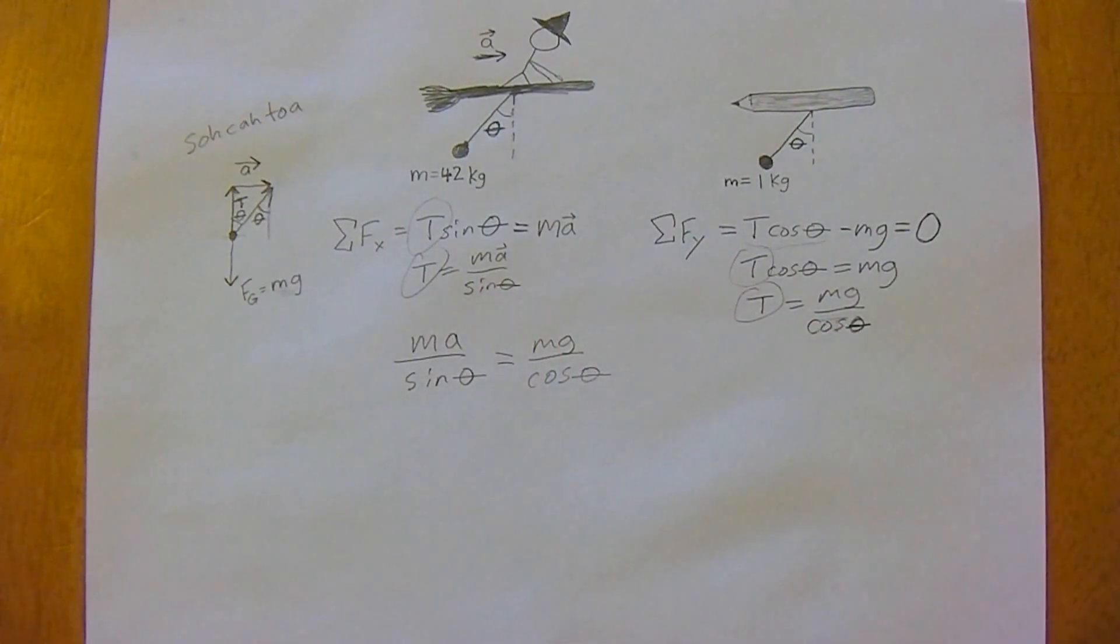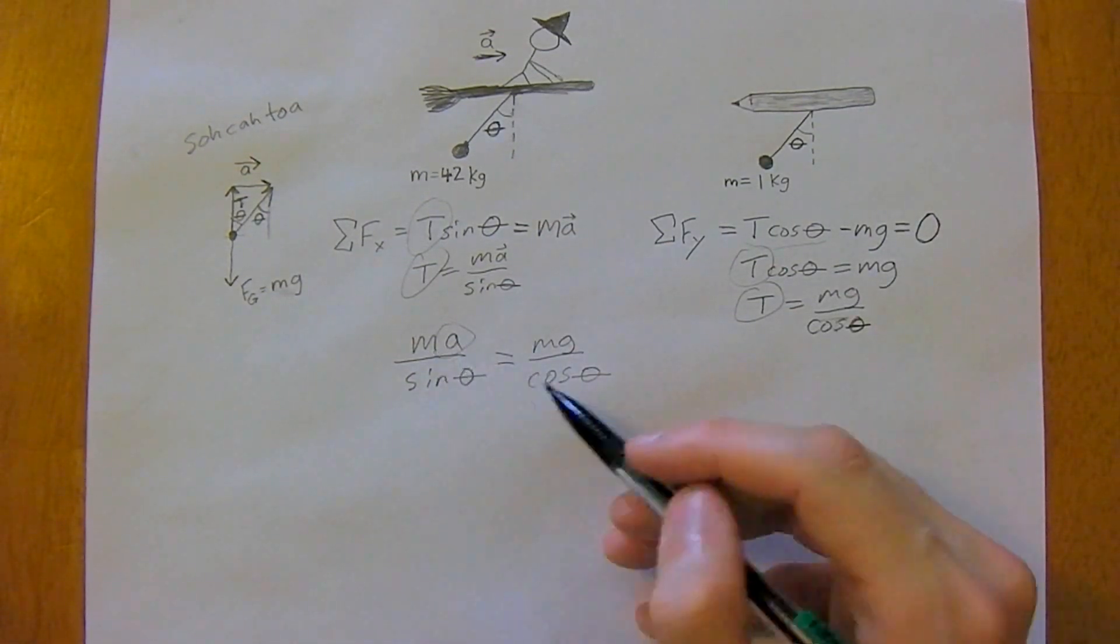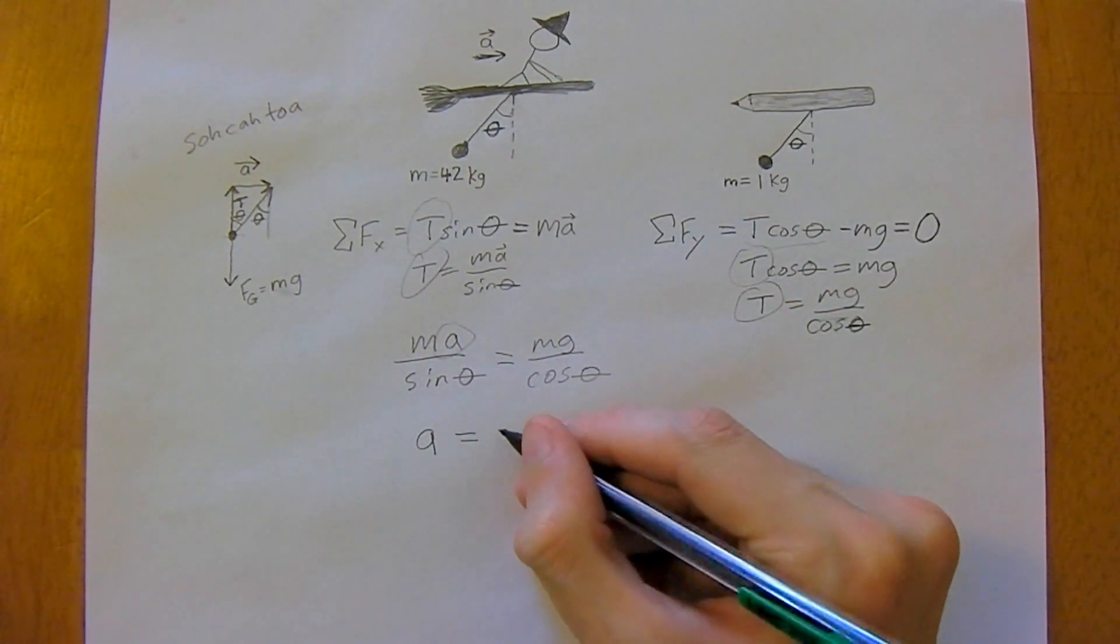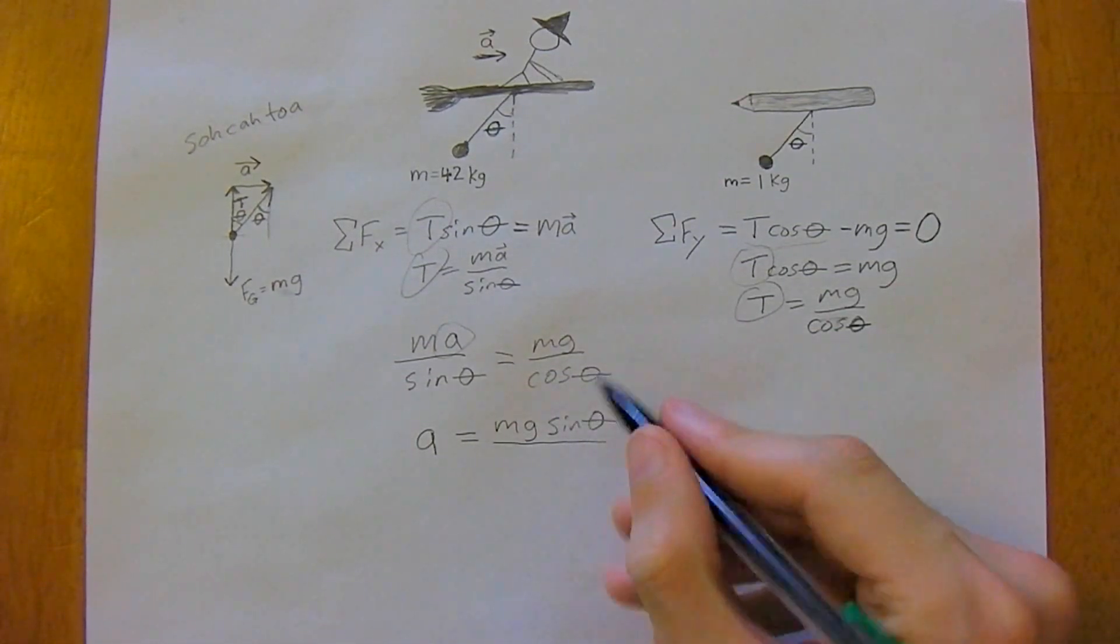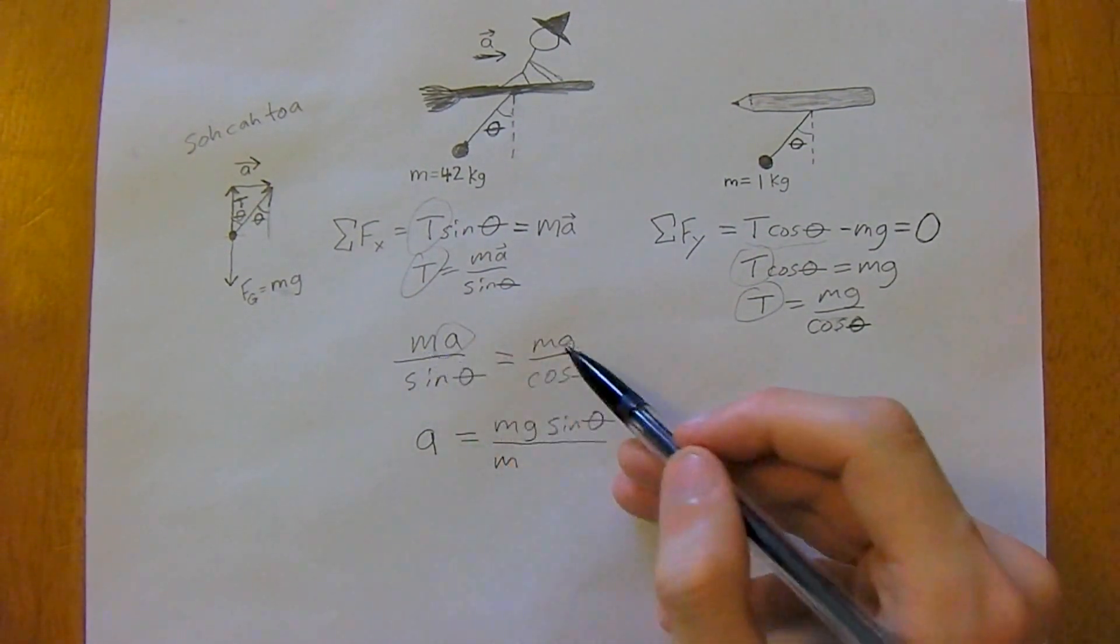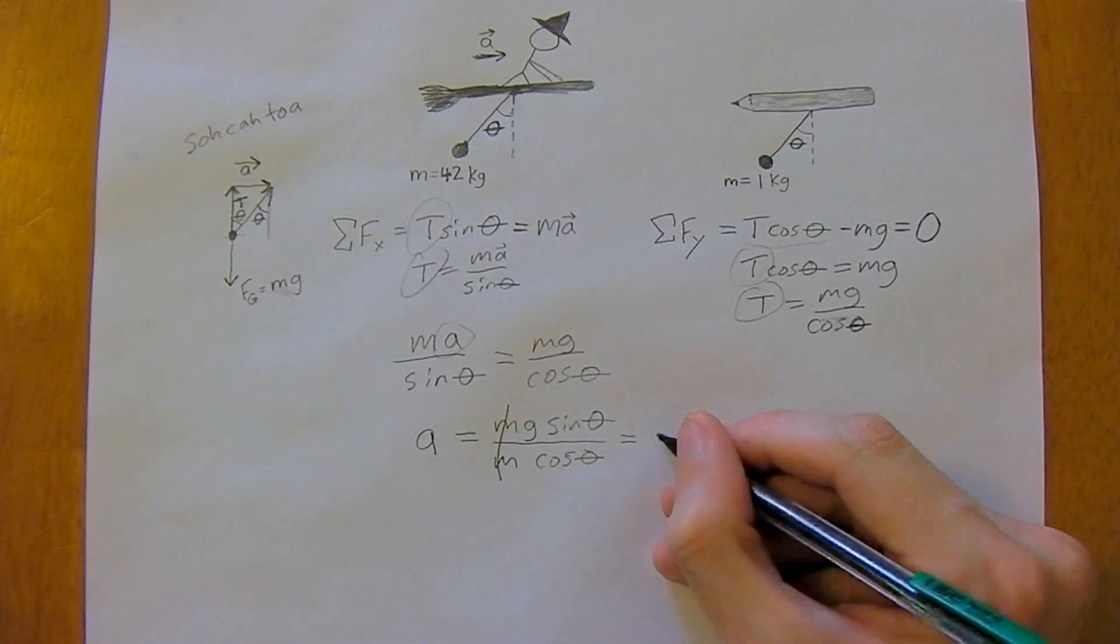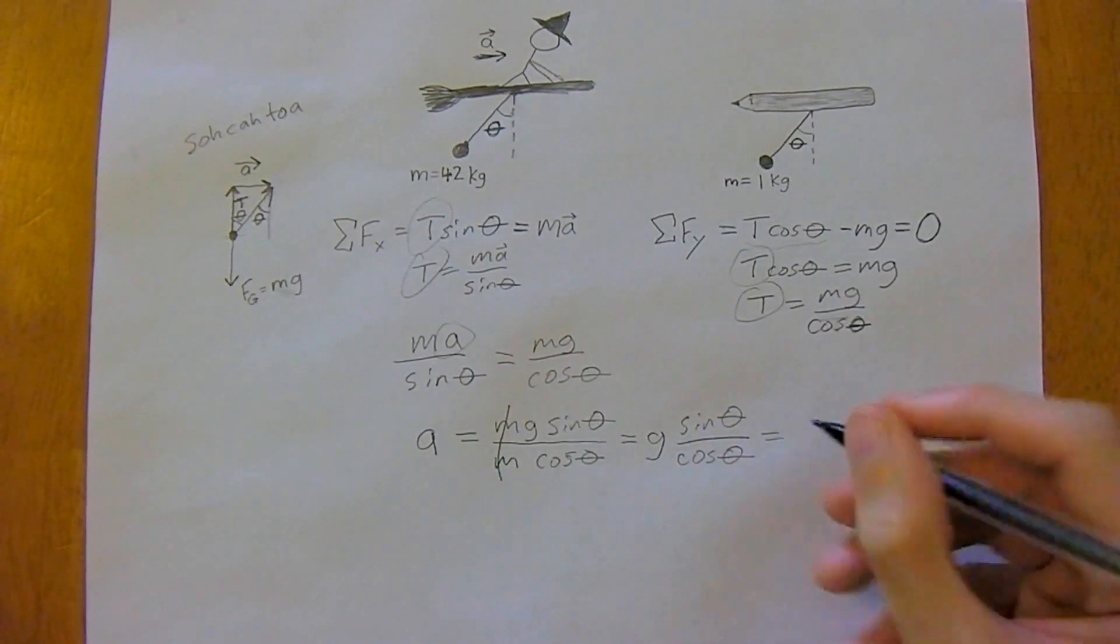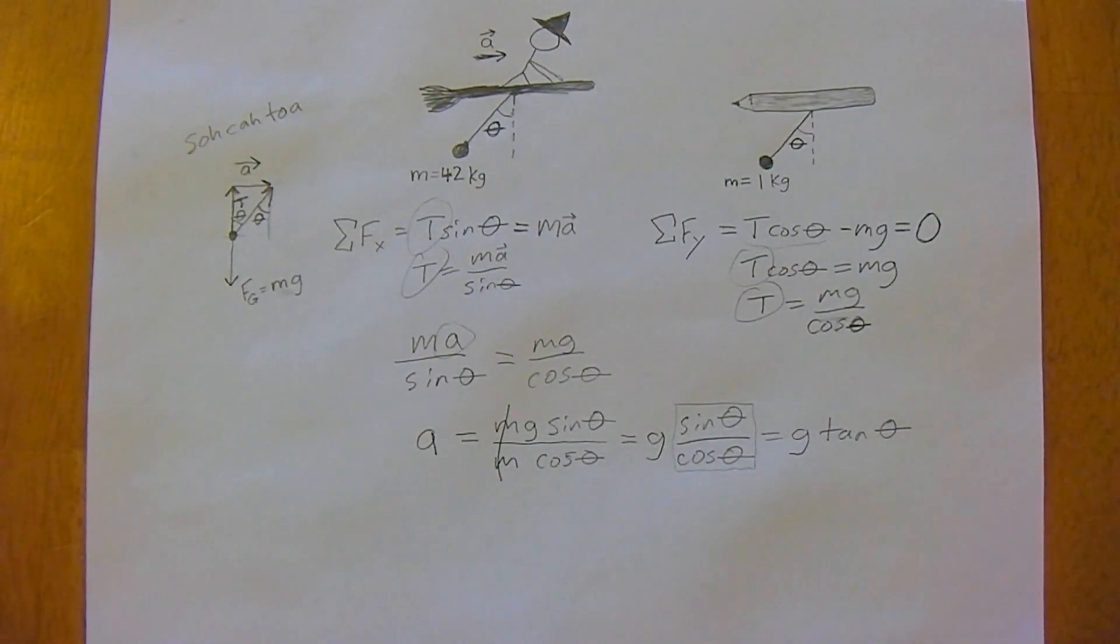All we need to do now is get the acceleration. Multiply both sides by sine of theta and divide both sides by m, times cosine of theta. The masses cancel, so that's equal to g sine theta over cosine theta. With your trig identities, this is a big one—that's g tan theta.